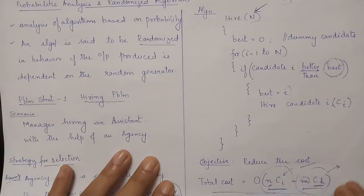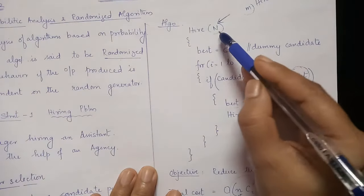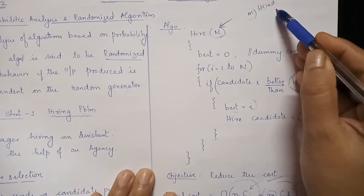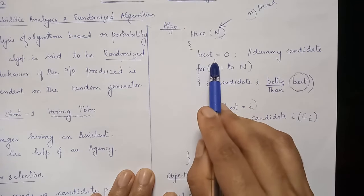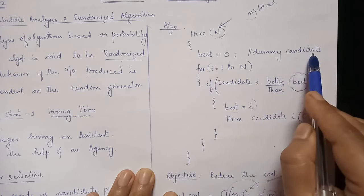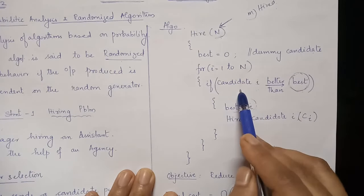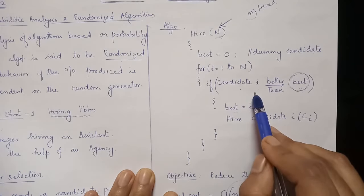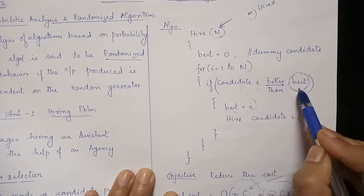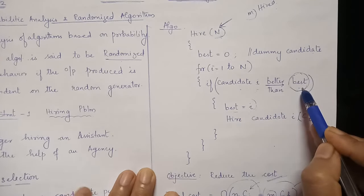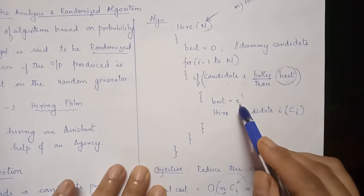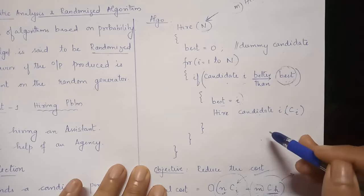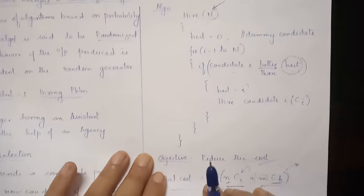The pseudocode for this problem is as follows: n is the number of candidates to be interviewed, and out of these n candidates, some m candidates will be hired. We initialize the variable 'best' with the value zero, indicating a dummy candidate. When we interview a candidate, we compare that candidate with the value in 'best' — that is, we compare candidate i with the current assistant. If the new candidate is better, he is hired and 'best' is reset to i. In effect, hiring takes place and firing of the current assistant also takes place.